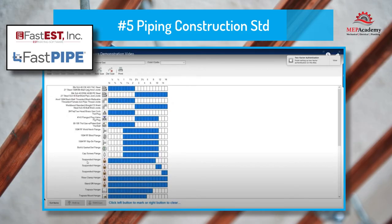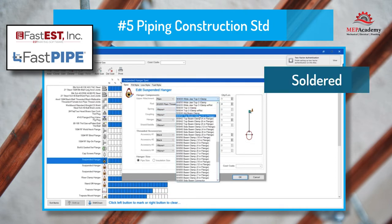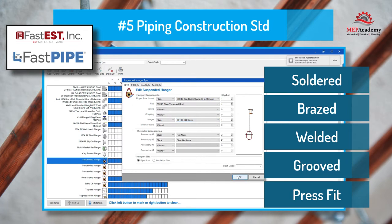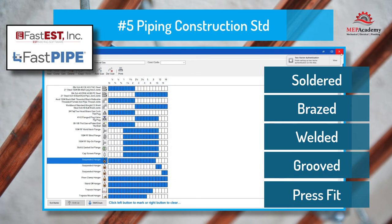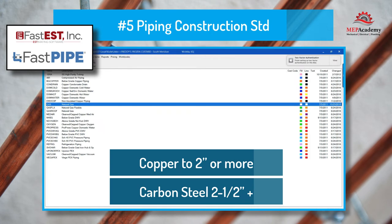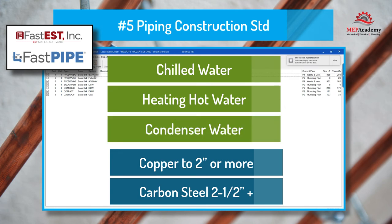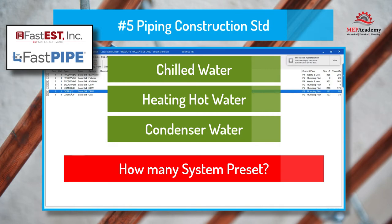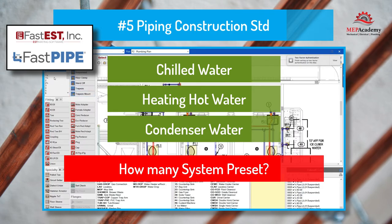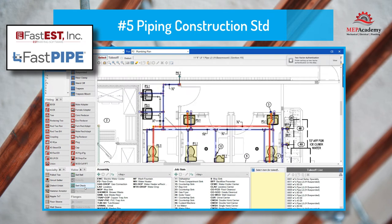Number 5: HVAC Piping Construction Standards. The database will contain different materials and methods for joining pipe and fittings together, from soldered, brazed, welded, grooved, pressed, and pushed joints. Construction estimating software programs contain many different piping material types that can be combined in various size breaks, such as using copper up to 2 inch and carbon steel from 2.5 inch and up, all set up under one system such as chilled water, heating hot water, or condenser water. Ask how many systems come pre-set up and which ones. If you use other types of materials like PolyPro or PressFit type fittings, be sure to ask if they are available in the database, as setting them up creates extra implementation time.